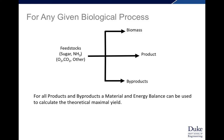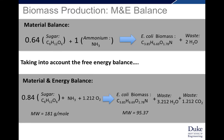This analysis can be done for any given biological process. We went through how to calculate this for biomass — converting feedstocks into biomass, taking into account both a material balance and an energy balance. The same math and the same balance can be done for any product, whether a large protein or a small molecule that has a chemical formula you can define, as well as any particular byproducts. For all products and byproducts, a material and energy balance can be used to calculate the theoretical maximum yield.